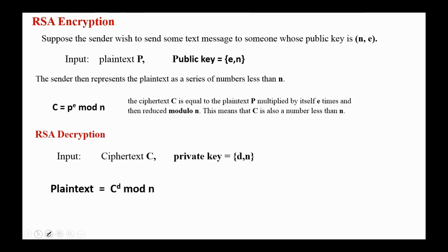Next, the process of encryption according to RSA. Suppose the sender wishes to send some text message to someone whose public key is (n, e). So the input is the plaintext p and the public key. The sender then represents the plaintext as a series of numbers less than n. The ciphertext C is equal to the plaintext p multiplied by itself e times and then reduced mod n. This means that C is also a number less than n.